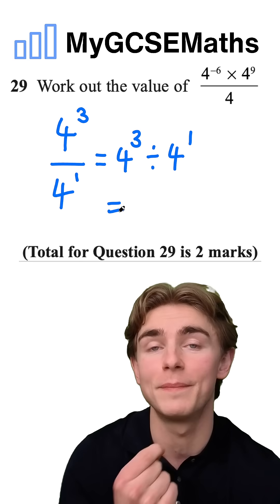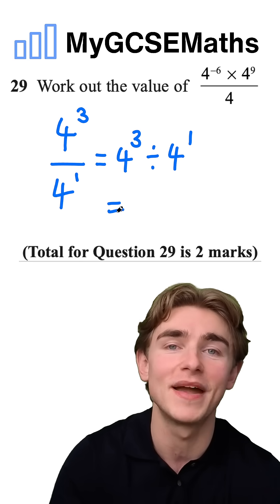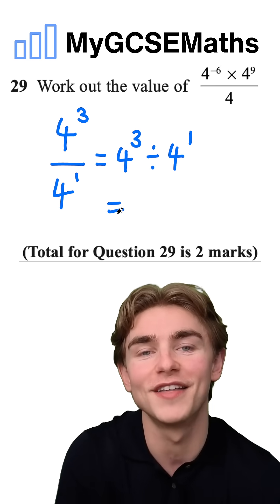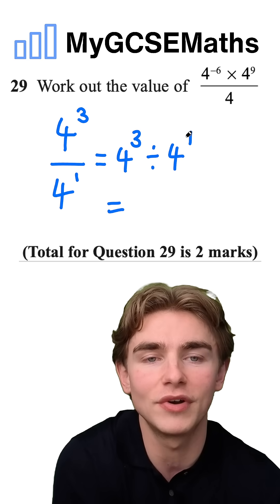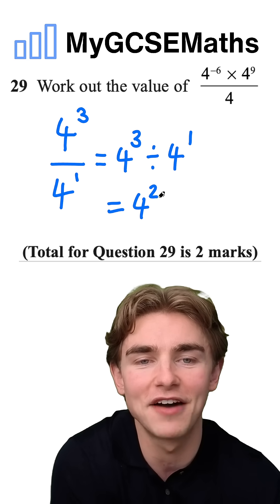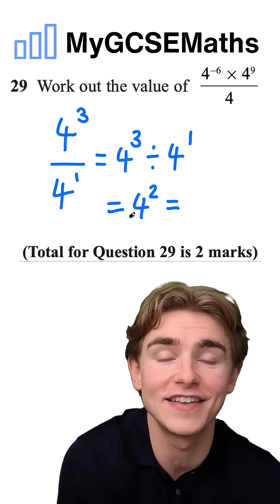What do we do when we have a base to a power and we divide it by the same base to another power? We subtract those powers. So we're going to do 3 subtract 1. That is going to give us 2 and we're going to have 4 squared as our answer.